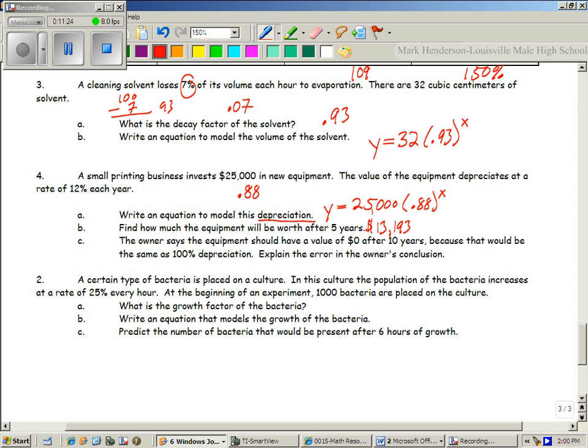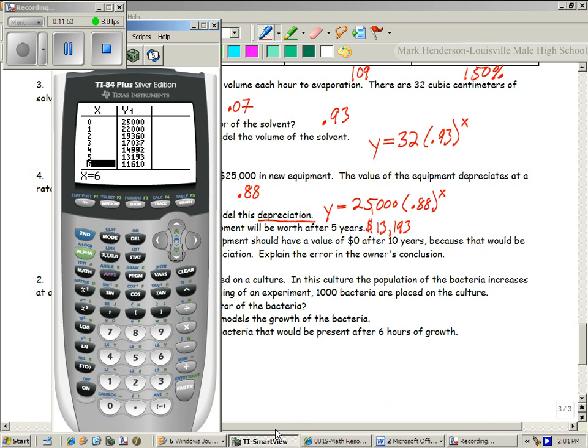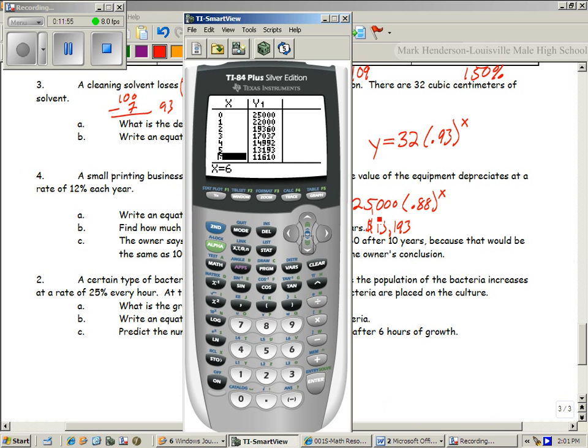So but let's look at part C. The owner says the equipment should have a value of $0 after 10 years because it would be the same as 100% depreciation. Is that right? No. Why, Mitchell? All right. So first of all, it would not equal, you're right, it would actually equal 120% depreciation if we're counting it like that. So that's one error they made.